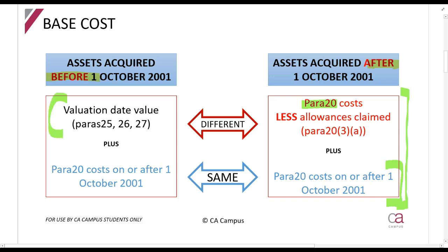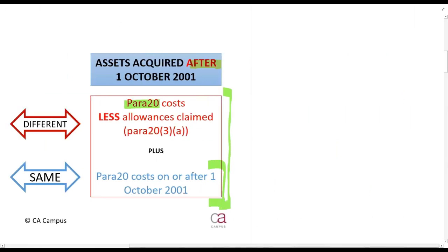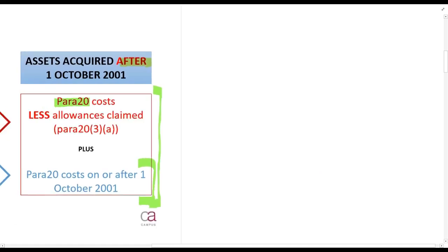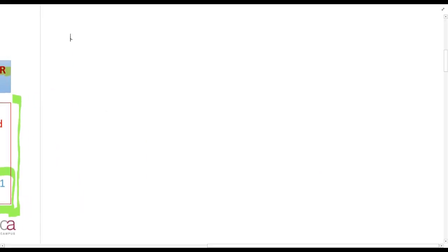For assets acquired before 1 October 2001, we start with the valuation date value. Remember, 1 October 2001 is the valuation date. We then add other costs. Let me explain simply what the reason for this is, and this ties in with your knowledge of the CGT net.